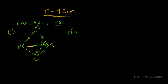Since triangle PQS is isosceles, the base angles are equal. Let angle PQS equal X. Then the angle at QPS is also X. The base angles of an isosceles triangle are always equal since two sides are equal. So angle PQS equals angle QPS, both equal to X.